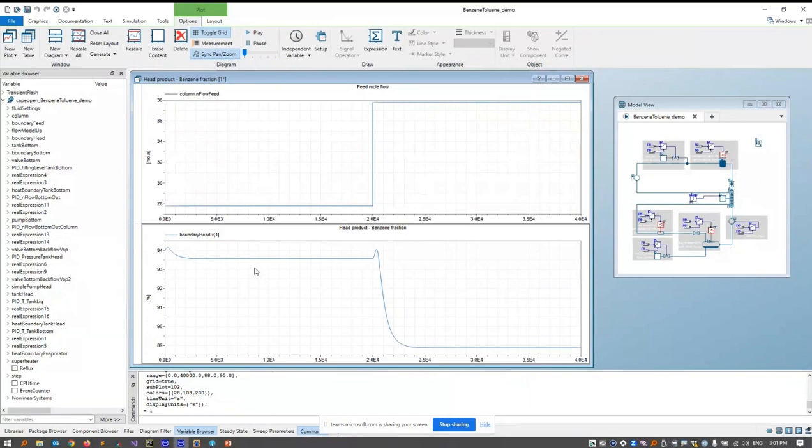And the impact on the head product quality on the benzene fraction in the head can be seen in the lower diagram here. At the start of the simulation, the model has to settle in and then it gets to a steady state. And with the step of the feed flow, we have a small overshoot and the model settles in again on a lower quality.